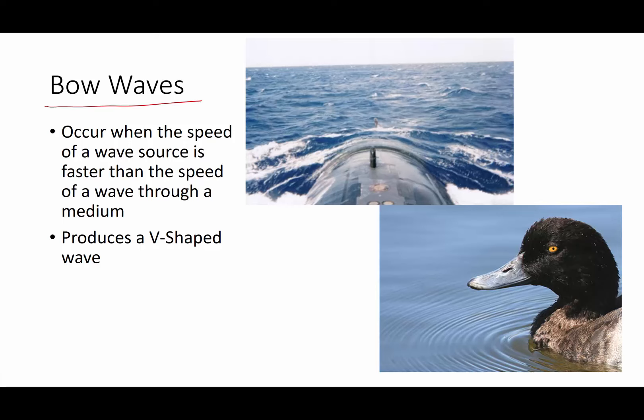Hi folks, this time we're going to talk about bow waves. Now a bow wave occurs when the speed of a wave's source is actually going faster than the speed of the wave it's producing through a medium.